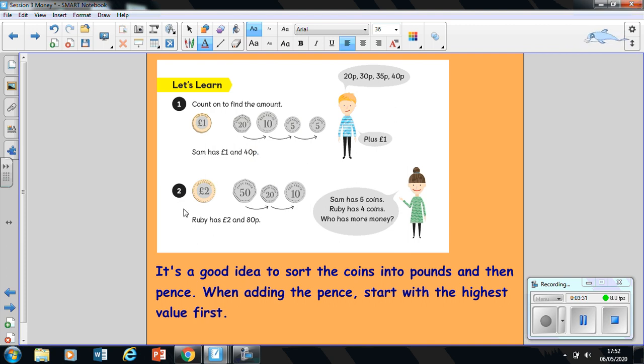Now let's check your work for Ruby's amount. Ruby had a two pound coin and then she had some pennies as well. We're going to count the two pounds and keep it there, then count up our pennies together. There's 50 pence, adding 20 makes 70, and adding 10 more makes 80 pence. So Ruby has two pounds and 80 pence.